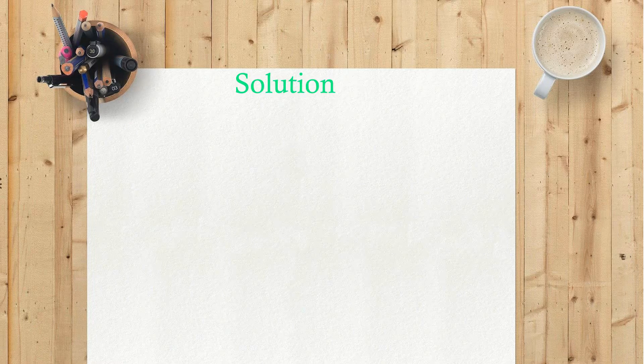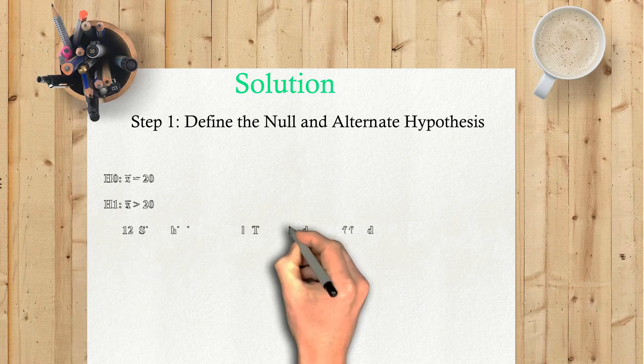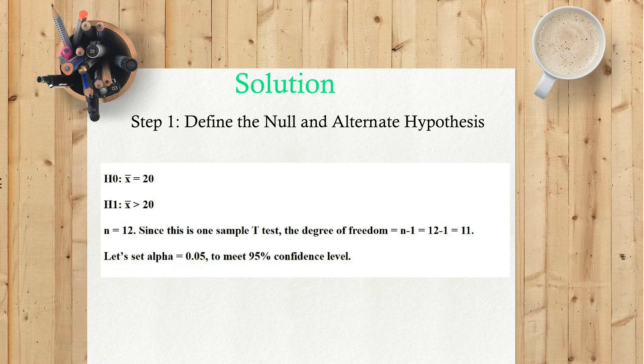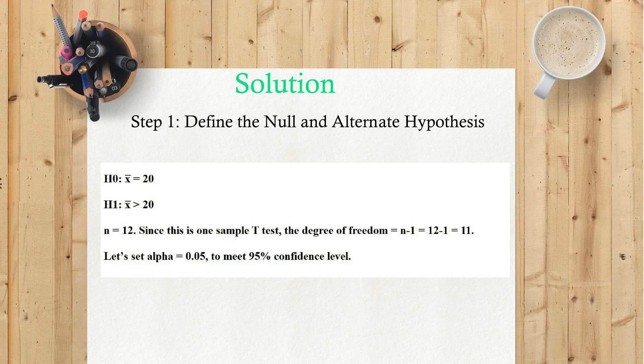Solution. Step 1: Define the null and alternate hypothesis. H₀: x̄ equals 20. H₁: x̄ greater than 20. n equals 12. Since this is one sample t-test, the degree of freedom equals n minus 1 equals 12 minus 1 equals 11. Let's set α equals 0.05 to meet 95% confidence level.